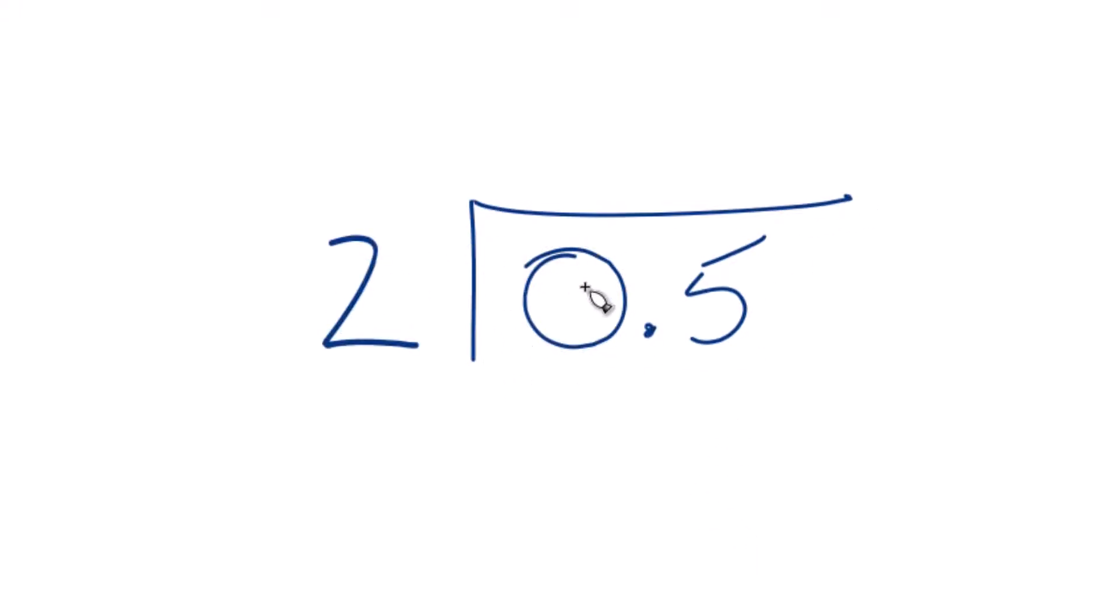So 2 doesn't go into 0. What we can do is we can take and move our decimal point over here as long as we put 0 decimal point up here.